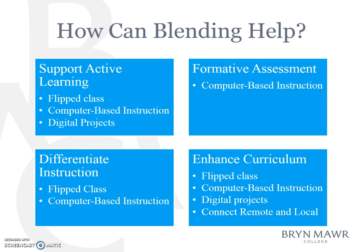If your course goals or pain points are related to engagement or student mastery — for example, if you want to interest students in a discipline, get them to take ownership of their learning, help make learning stick, or shift to a skills-based rather than a content-based approach to teaching — then incorporating active learning into your course can help. You might want to design the course around a digital project or flip your class, or add online assessment and feedback to ensure that students are understanding the material.